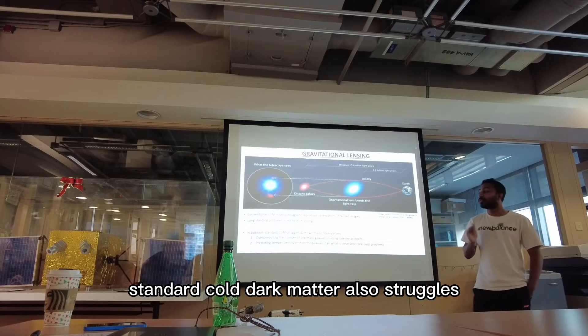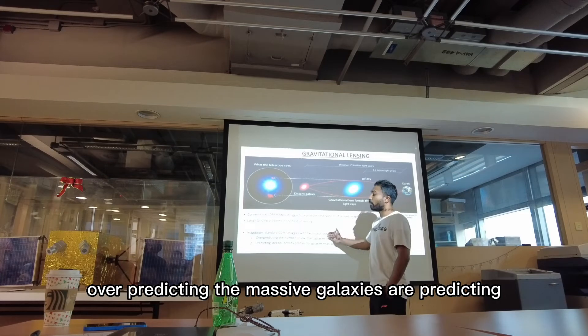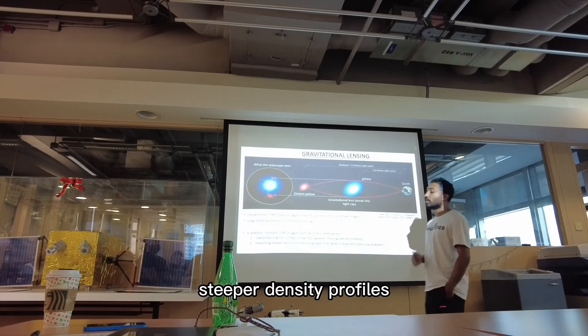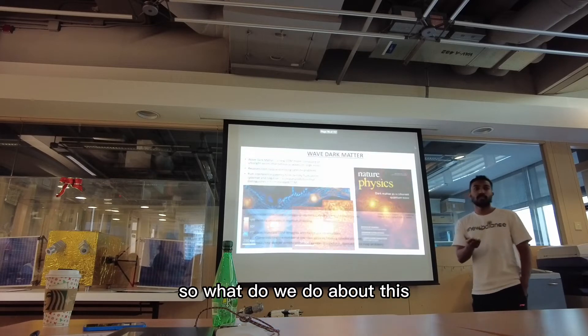But in addition to this, standard cold dark matter also struggles with certain other observations like over-predicting the mass of galaxies or predicting steeper density profiles. So what do we do about this?